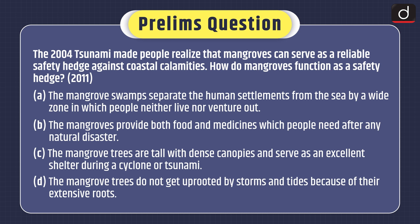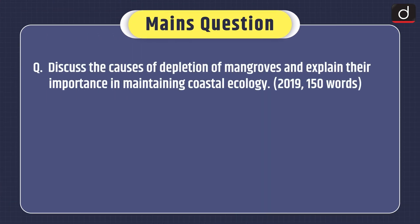Now it's time for practice questions. First, note down the prelims-based question, which was also asked in the 2011 exam: 'The 2004 tsunami made people realize that mangroves can serve as a reliable safety hedge against coastal calamities. How do mangroves function as a safety hedge?' Options include: mangrove swamps separate human settlements from the sea; mangroves provide food and medicines after disasters; mangrove trees are tall with dense canopies and serve as shelter; and mangrove trees do not get uprooted by storms due to their extensive roots. Send your answers in the comment section. The mains question, asked in 2019, is: 'Discuss the causes of depletion of mangroves and explain their importance in maintaining coastal ecology.'